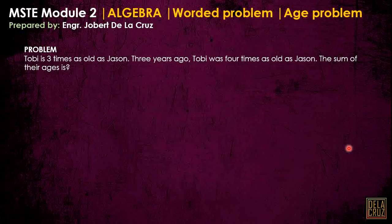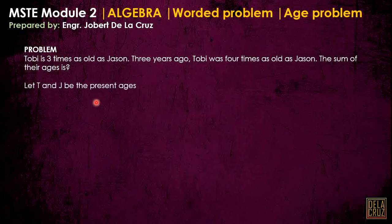Let's continue on the age problem. Toby is three times as old as JSON. Three years ago, Toby was four times as old as JSON. The sum of their ages is what we need to calculate. So starting with this statement — Toby is three times as old as JSON — let's assume variables T and J be the present ages of Toby and JSON.